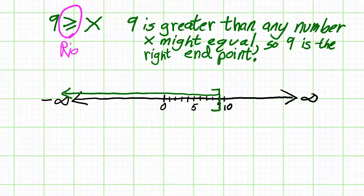So even though the inequality sign is pointing to the right, the arrow on the graph is pointing to the left.